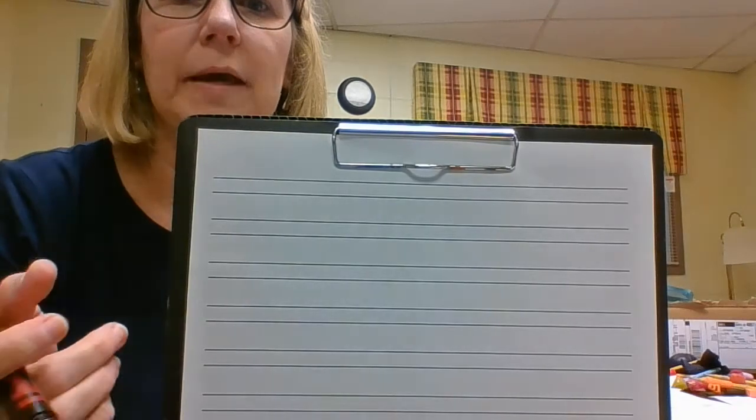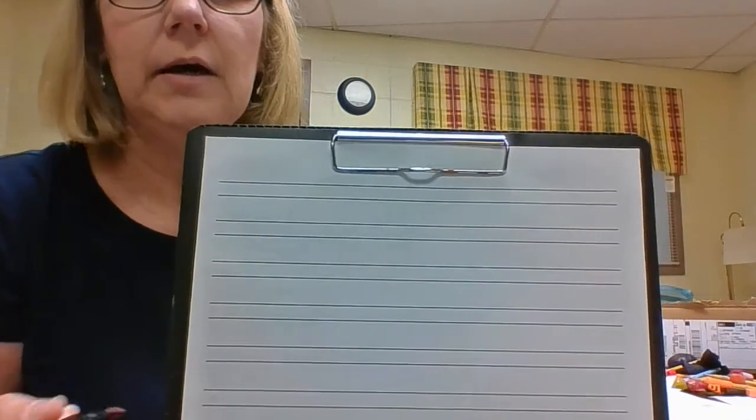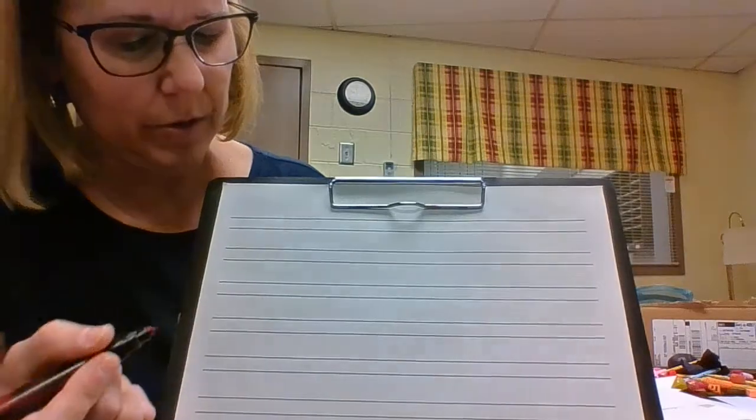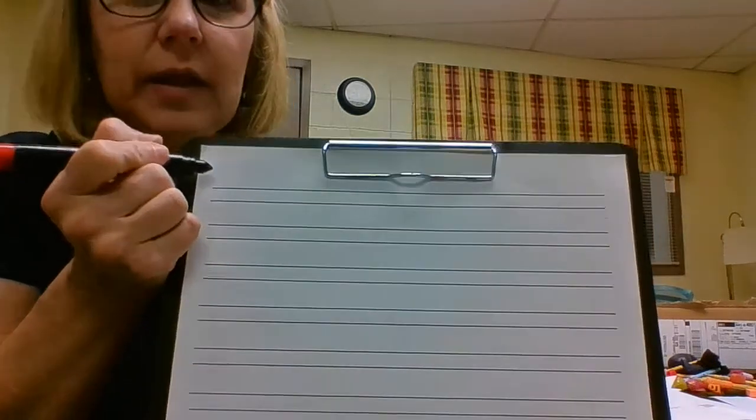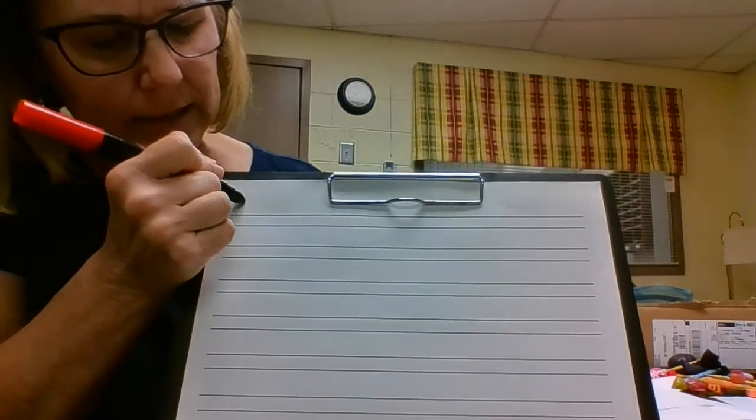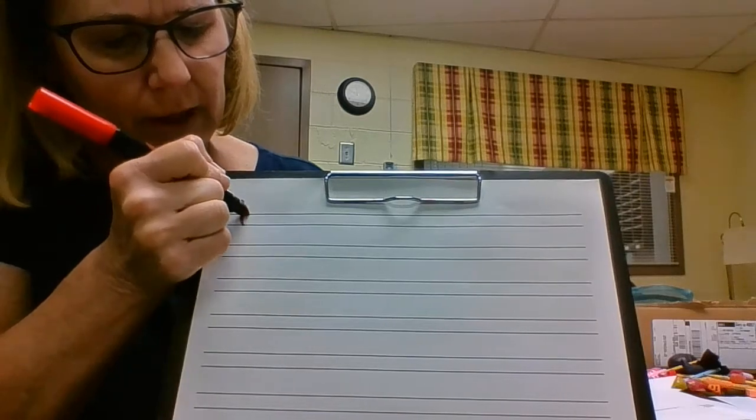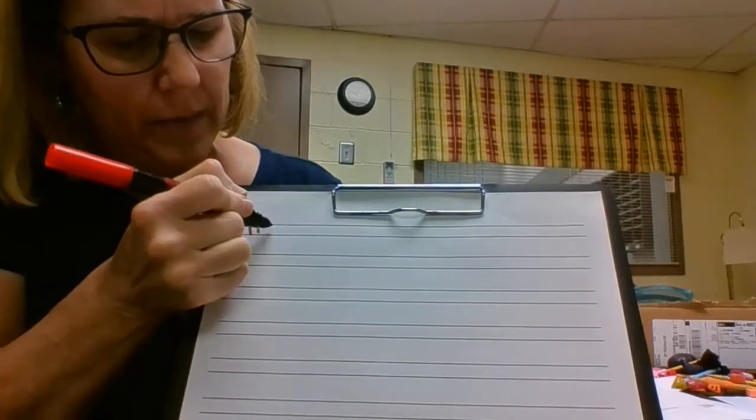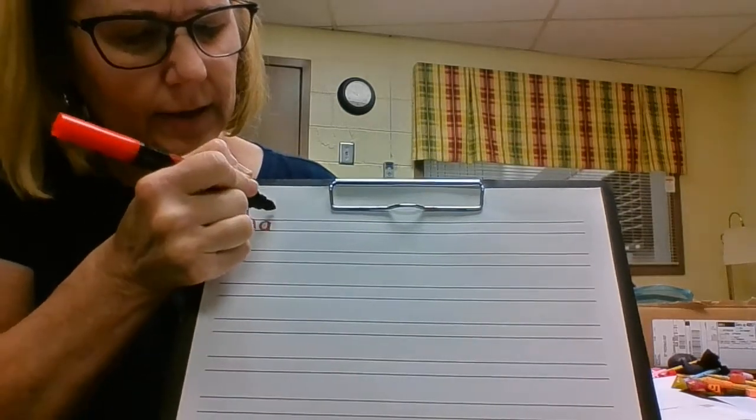So even if their handwriting is not as good, it will make it more legible for the teachers sometimes. The way you write on this paper is above the line. So say to write 'hat,' the H is above the line, the A is in the line, and the T is above.